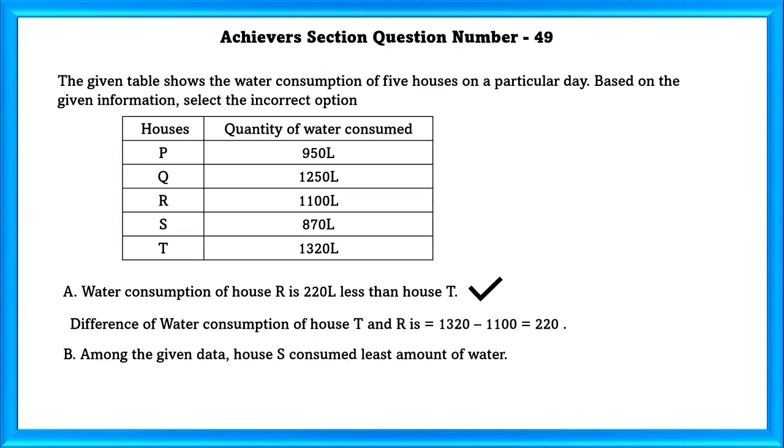Now, let us check B. Among the given data, house S consumed least amount of water. Yes, that is also correct.